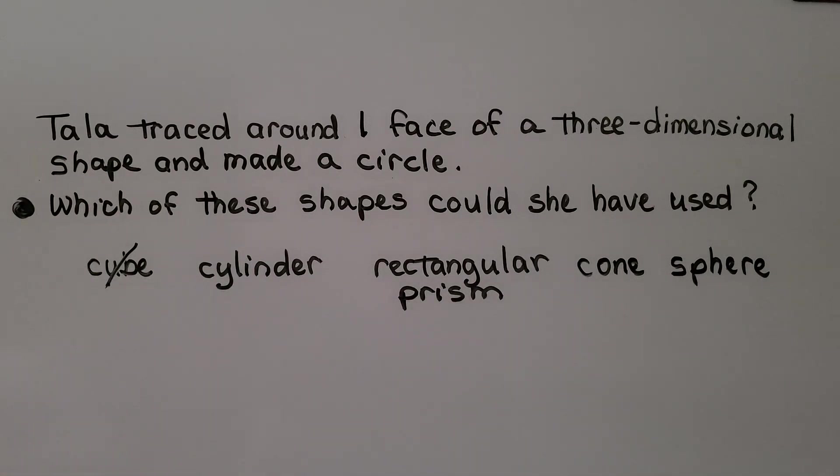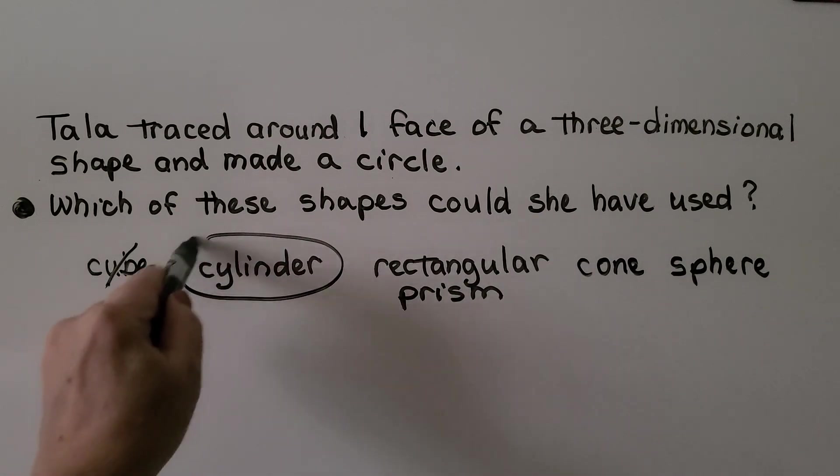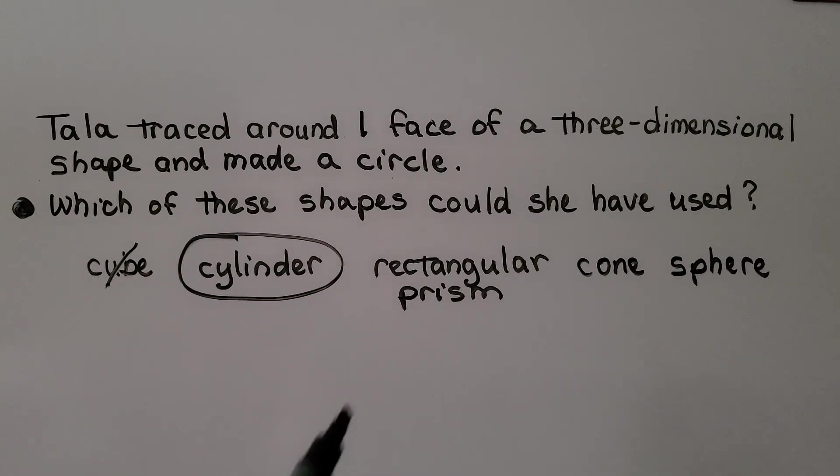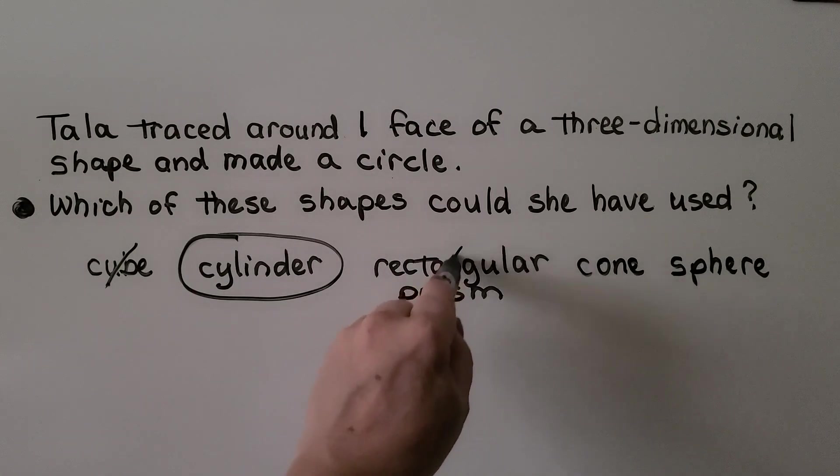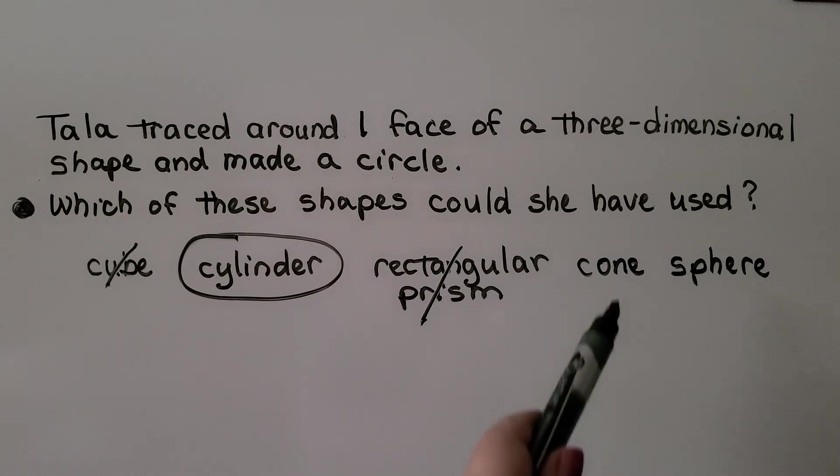Is there a circle on the face of a cylinder? If you said yes, you're right. There is a circle on the face of a cylinder. Is there a circle on the face of a rectangular prism? No, there's not.